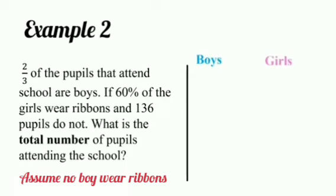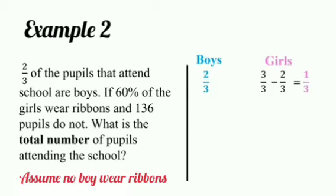Note that they gave you the fraction representing boys is two-thirds. We can therefore figure out the fraction representing girls. This is done by subtracting two-thirds from the whole: three over three minus two over three, and this would give me one-third. They also said that 60% of the girls wear ribbons. We can therefore find out the percentage of girls that do not wear ribbons — that is 100% minus 60%, which is equal to 40% of the girls. Remember, this just represents the percentage of the girls that do not wear ribbons.